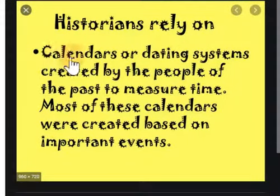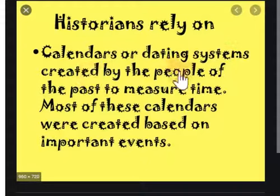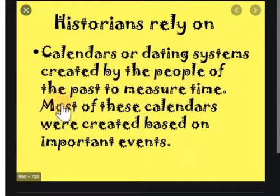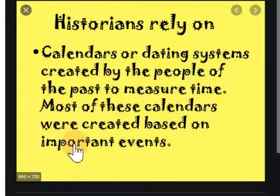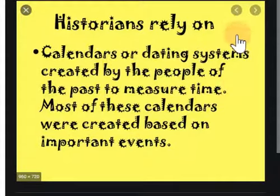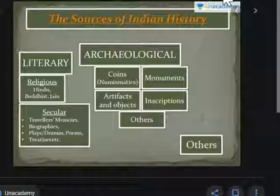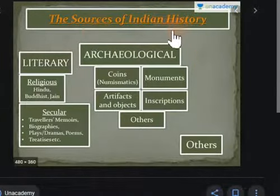Historians rely on calendars or dating systems created by the people of the past to measure time. Most of these calendars were created based on important events. So, historians rely on and trust these calendars, and all the details about events are carefully recorded in these calendars.